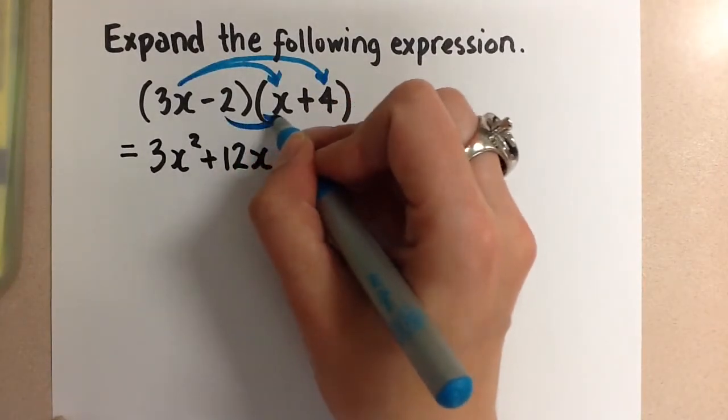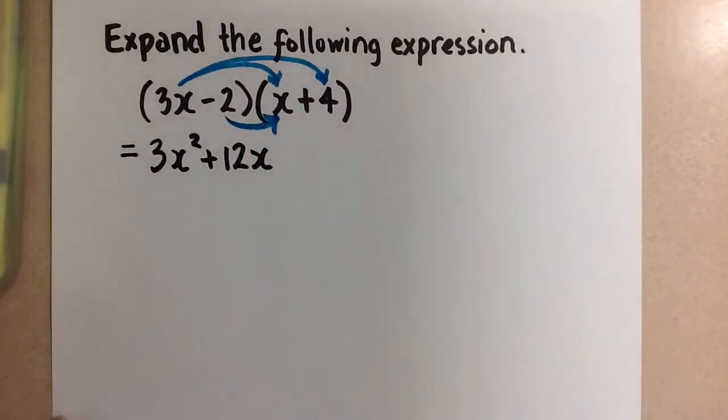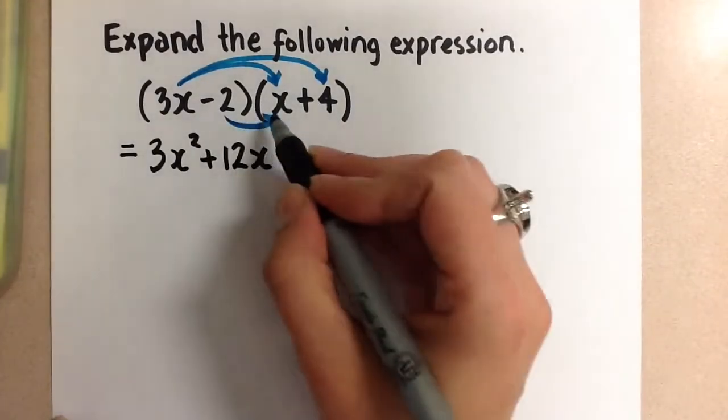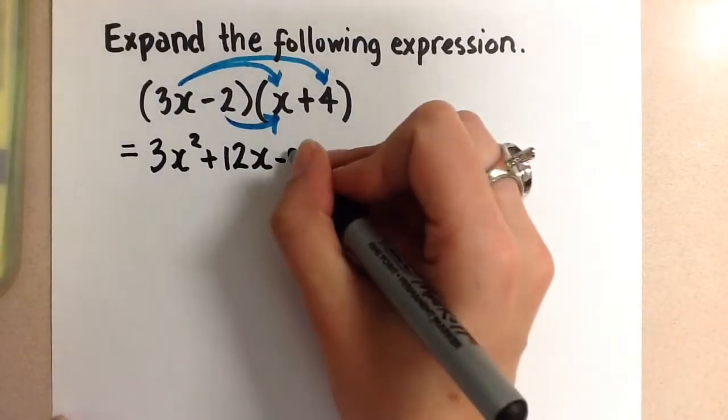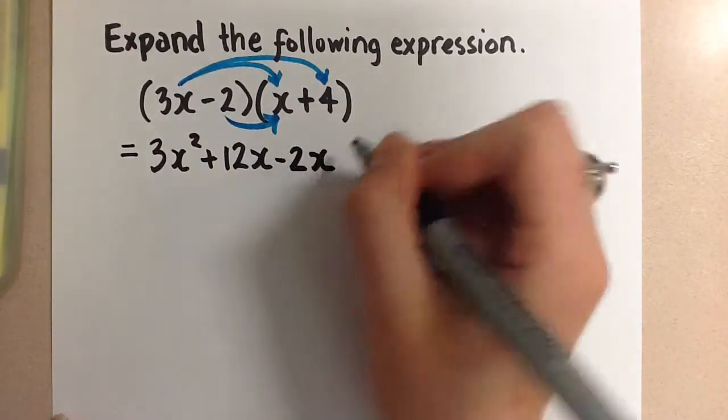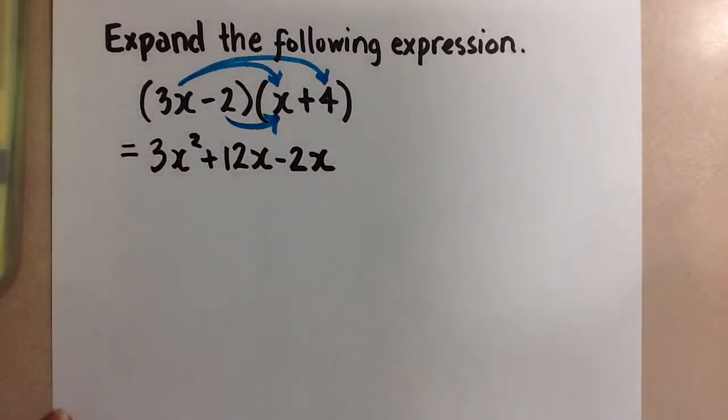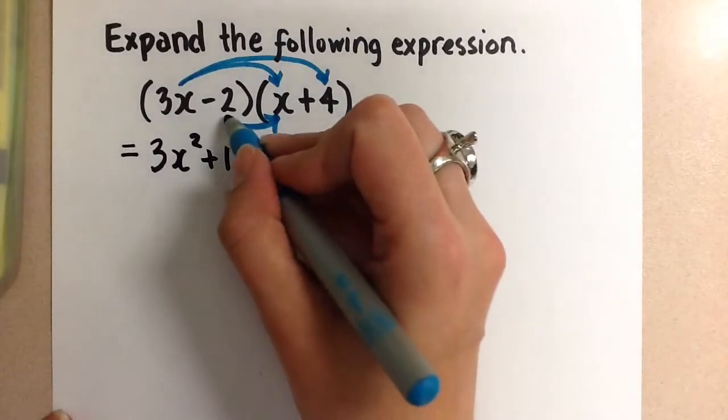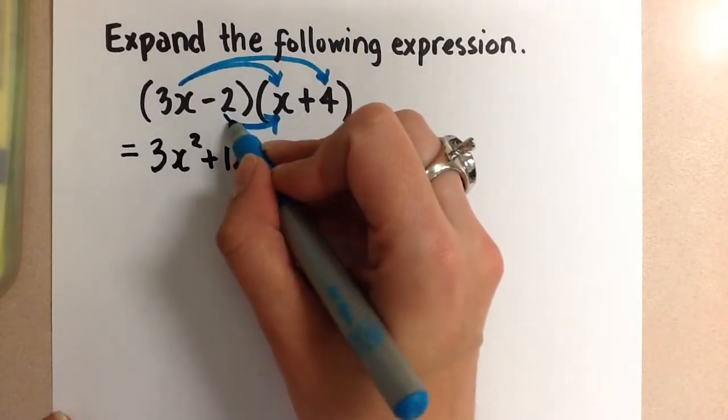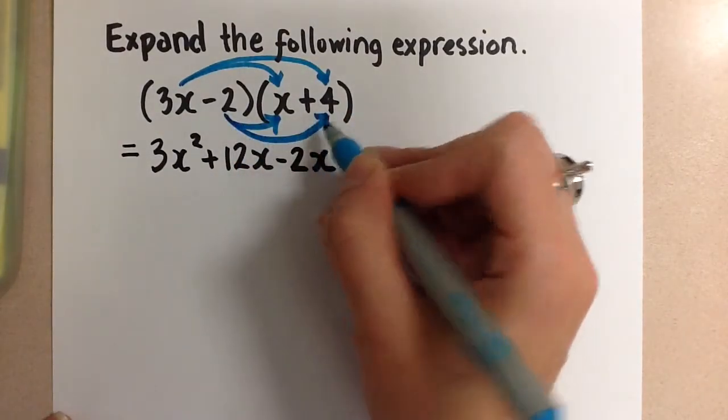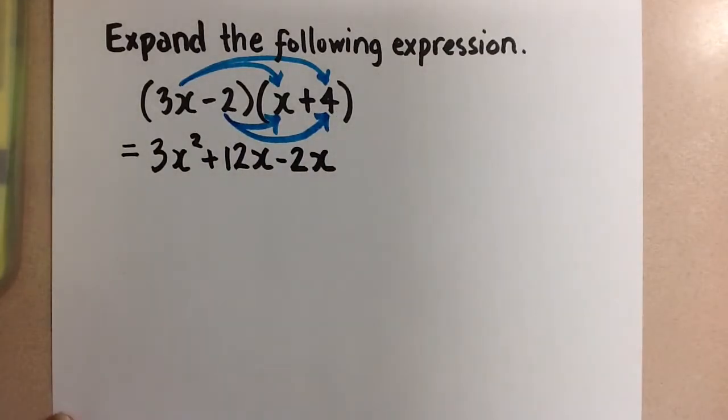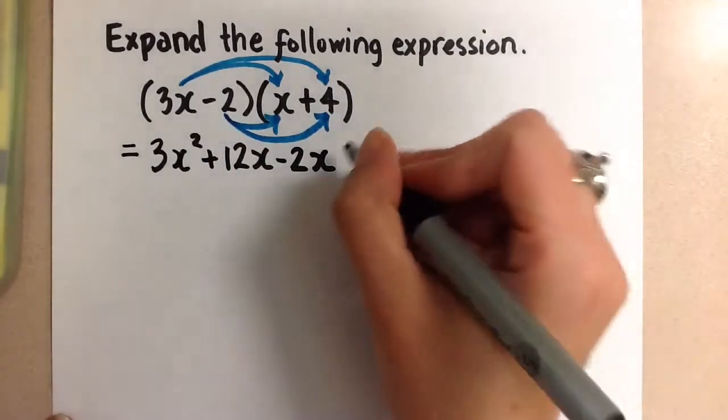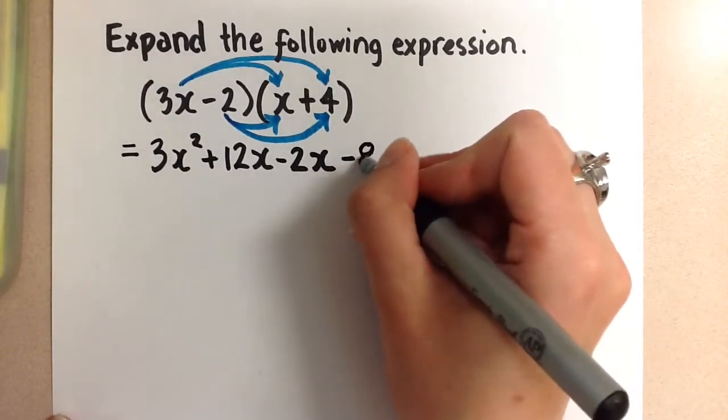Negative 2 times x. So negative 2 times 1 is negative 2, and then we have the x on it. And finally, we're going to multiply negative 2, this term here, with the positive 4. So we're multiplying the last two terms together. And negative 2 times positive 4 gives us negative 8.